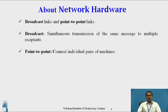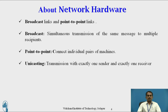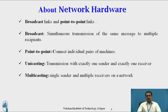Point-to-Point connects individual pairs of machines — it means one-to-one communication. Unicasting is the transmission with exactly one sender and one receiver.